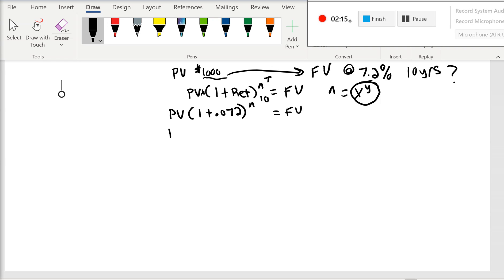So the present value is 1,000 times 1.072 to the exponent, or the X to the Y, 10. And that's going to be 2,004.23.